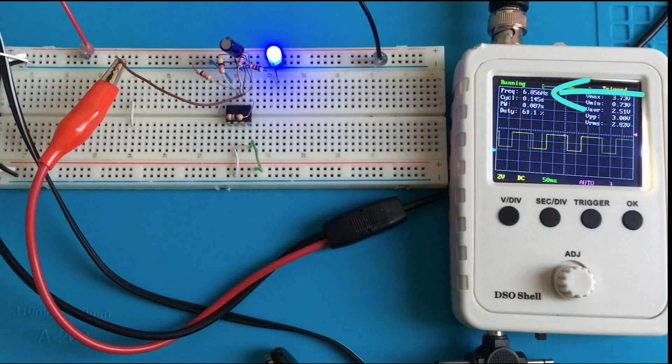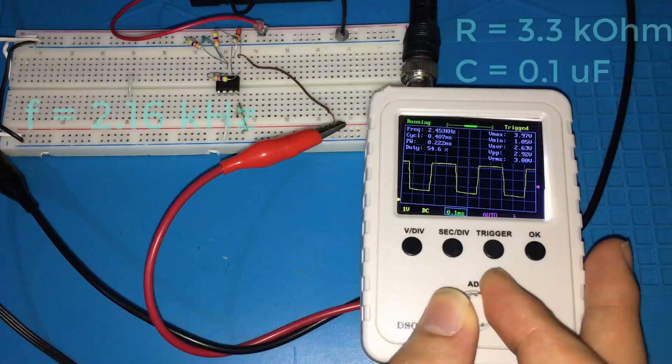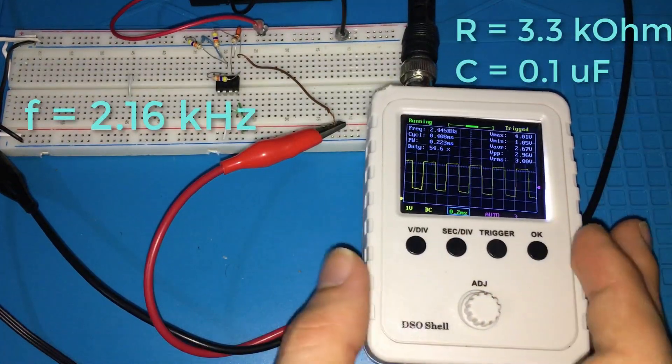Now it's time to see how this oscillator circuit will perform. Of course, you can achieve higher frequency by lowering the values in the RC network.